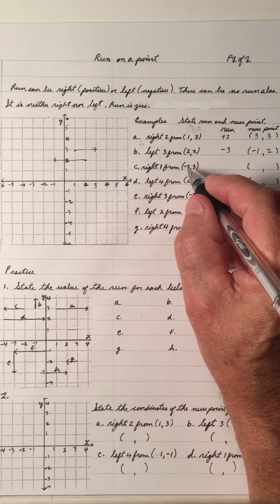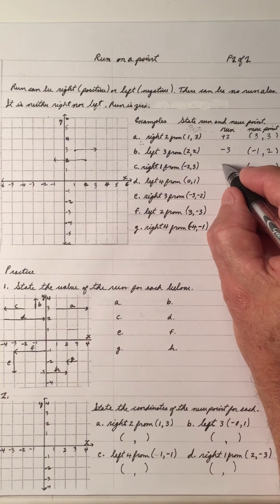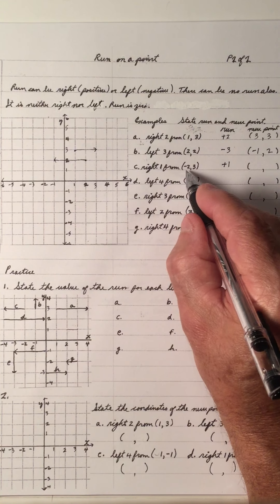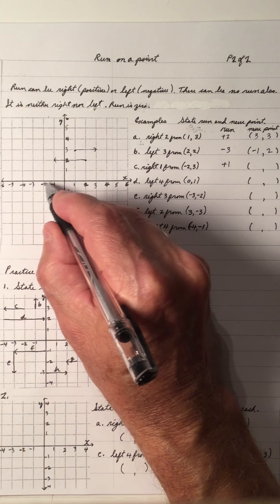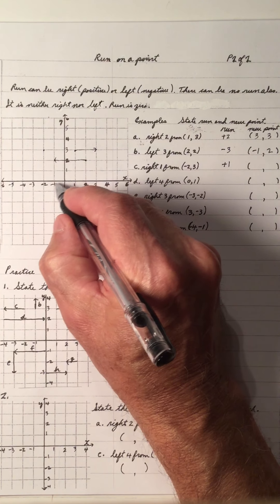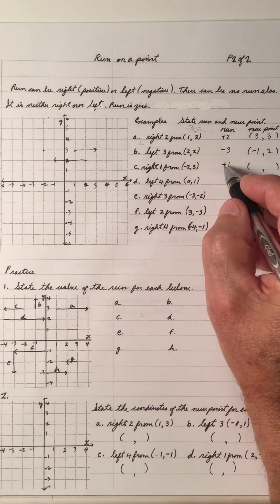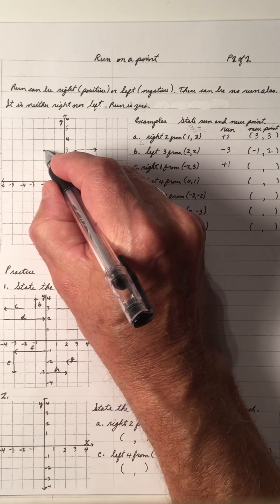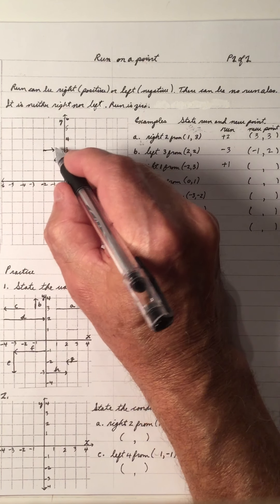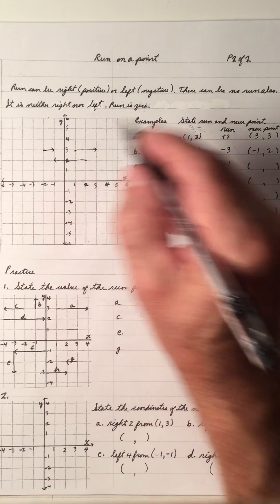Right one from the point (-2, 3). Right one means a plus one. The point (-2, 3): x is negative two, y is three. Two to the left, three up — there's the point. And we're going right one, plus one. The new point: x is negative one, y is three.